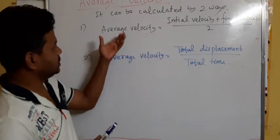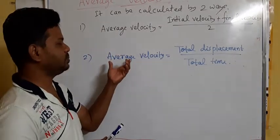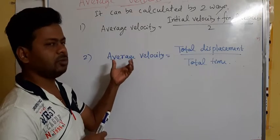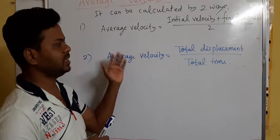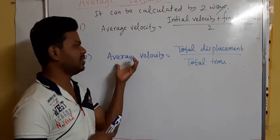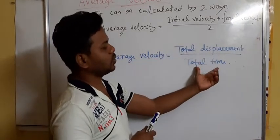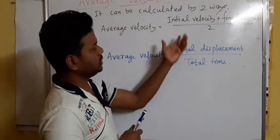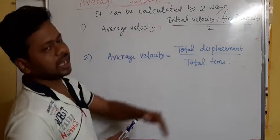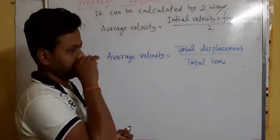As for average speed, if you remember, the formula for average speed is total distance by total time. Here, average velocity equals total displacement by total time. So there are two formulas, and the formula will be used according to the data given in the question.